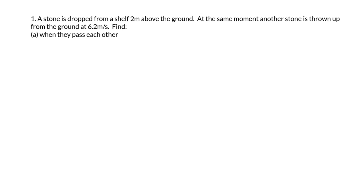We'll look now at slightly harder questions involving equations of motion. A stone is dropped from a shelf two meters above the ground. At the same moment, another stone is thrown from the ground at 6.2 meters per second. Find when they pass each other.